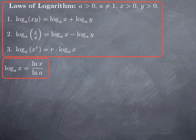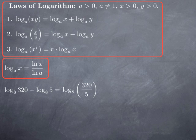So we have these laws of logarithm, which means we can manipulate expressions containing logs. For instance, if we evaluate log_8(320) minus log_8(5), it is a difference of two logs of the same base, so using the second log law, this equals log_8(320/5) = log_8(64). Now what is log_8(64)? It is the power to which we raise 8 to get 64. Since 8 squared is 64, this log equals 2.